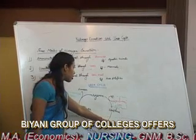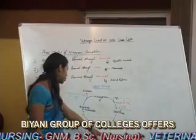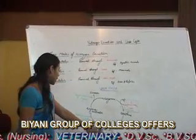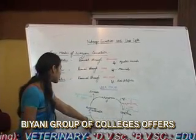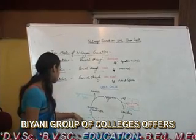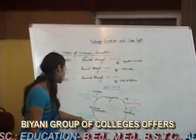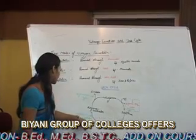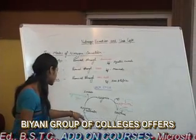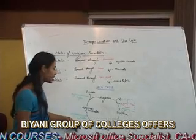This Carbamoyl Phosphate is then combined with Ornithine, resulting in the formation of Citrulline in the mitochondrial matrix. Finally, the Citrulline comes to the Cytoplasm, where it combines with the Carbamoyl group and forms Arginosuccinate by the activity of the enzyme Arginosuccinate synthetase.